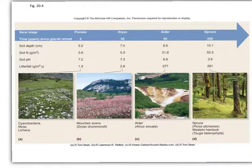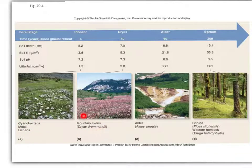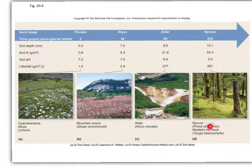These stages are characterized by the vegetation found there. The pioneer stage is the early stage where you see cyanobacteria, mosses, and lichens, eventually replaced by mountain avens — Dryas drummondii. That's eventually replaced by alder, this taller vegetation, which is eventually replaced by spruce and western hemlock, the climax community in these particular areas.